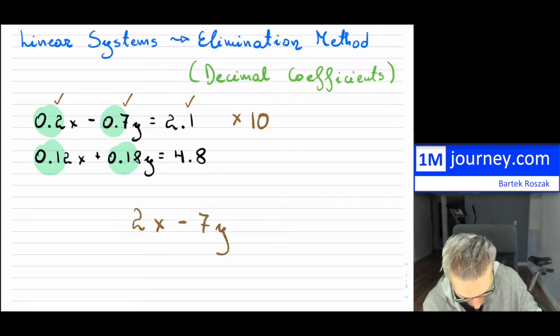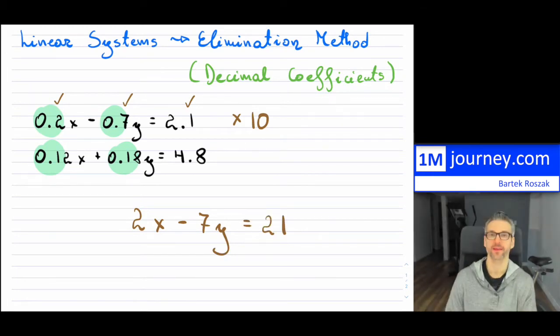Now the second line that you have, you do not have to multiply it by exactly the same thing. My goal is I don't want to have decimals and I can multiply that bottom line again. Now in this case it's not going to be by 10 because I have two decimal places in the 0.12, I have two decimal places in the 0.18, and then I have only one decimal place in 4.8. If I multiplied by 10 then I would only get rid of that 4.8 which would turn into 48, but the other two would still have decimals in it. So instead I will multiply by 100.